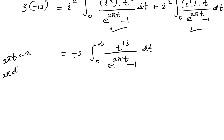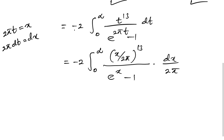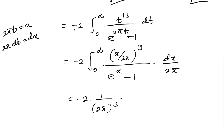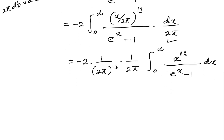Under the substitution 2πt = x, we have 2π dt = dx, so dt = dx/(2π), and t = x/(2π). The limits remain 0 to infinity. Substituting, t^13 becomes [x/(2π)]^13, and e^(2πt) - 1 becomes e^x - 1. This yields a factor of 1/(2π)^13 times 1/(2π), giving 1/(2π)^14 times the integral from 0 to infinity of x^13 over [e^x - 1] dx.